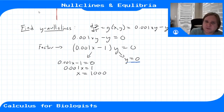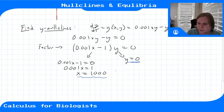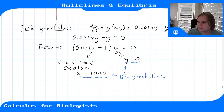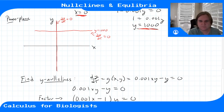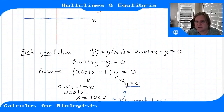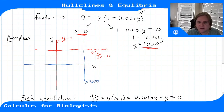Solving 0.001x − 1 = 0 gives x = 1000. So the two y-nullclines are y = 0 (the horizontal axis) and x = 1000 (a vertical line), both plotted in blue. Along these lines, dy/dt = 0. These parameters give a symmetric result, but that's just a consequence of the specific values chosen.